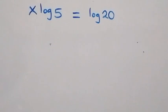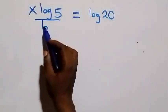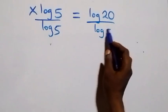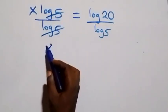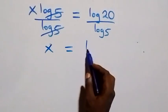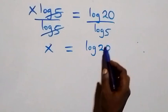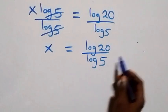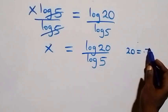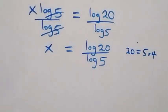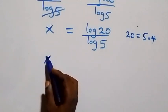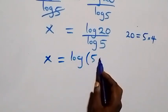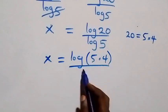Next step, we divide both sides by log 5. Log 5 cancels on the left, and we have x equals log 20 over log 5. Then we can write 20 as 5 times 4, so this becomes x equals log(5 times 4) over log 5.